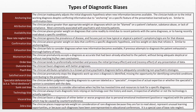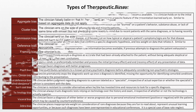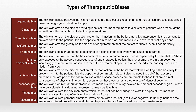And maybe there were a few others mixed in there. There are actually more than 20 types of diagnostic biases that have been described — more than we have time to discuss individually. And there are also therapeutic biases. In aggregate bias, the clinician falsely believes that his or her patients are atypical or exceptional, and thus clinical practice guidelines based on aggregate data do not apply to them. And in cluster bias, the clinician errs on the side of providing identical treatment regimens to a cluster of patients who present at the same time with similar but not identical presentations.